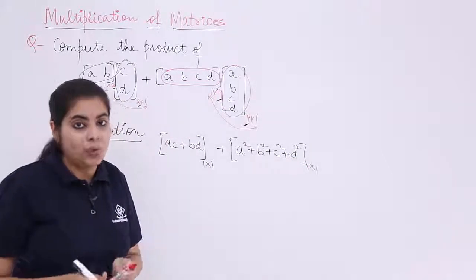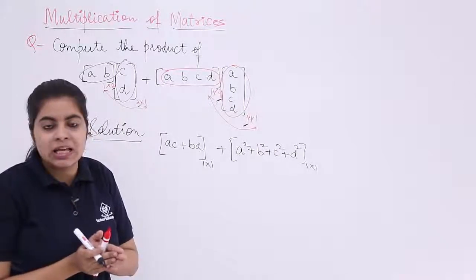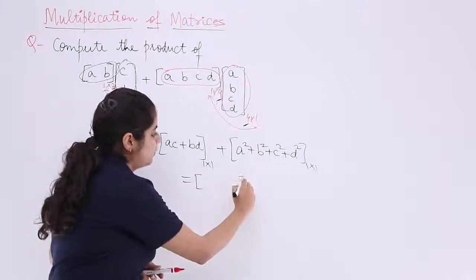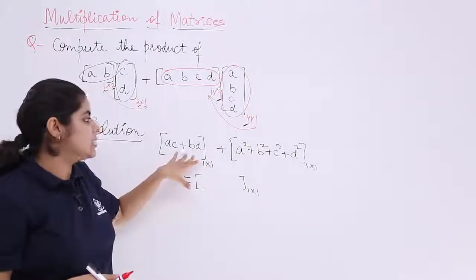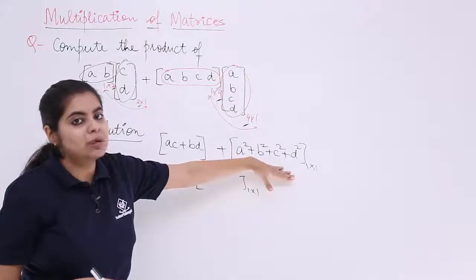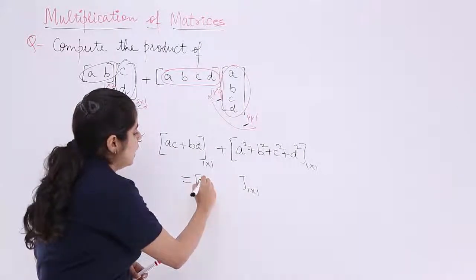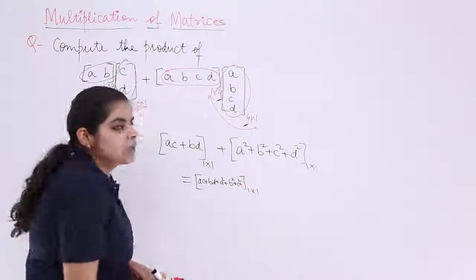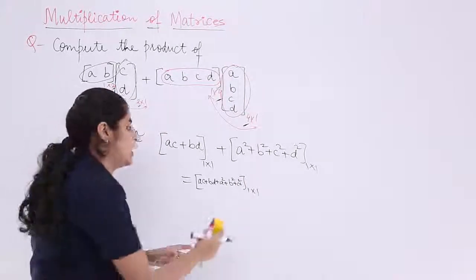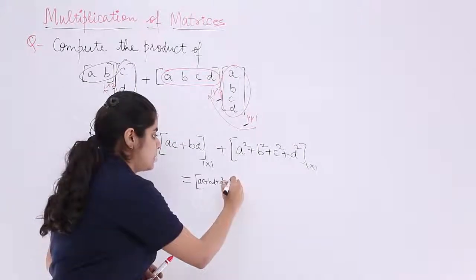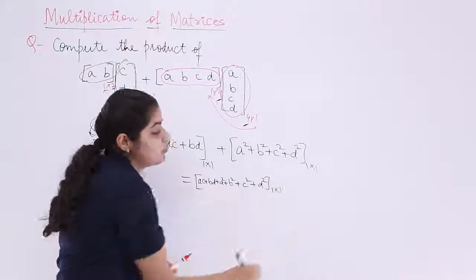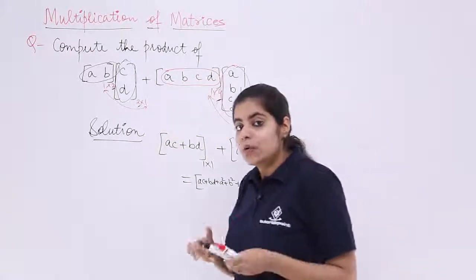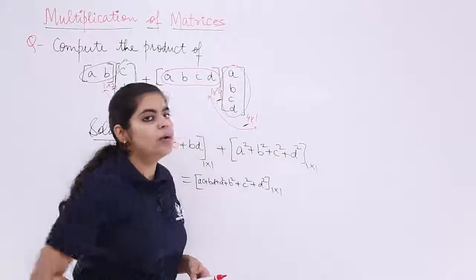Now, what about the addition of these two matrices? Addition is possible only when the order is the same — and both are 1×1, so we can add them. Adding them together gives AC + BD + A² + B² + C² + D². So the final answer is A² + B² + C² + D² + AC + BD — a simple result based on matrix multiplication and addition, yielding a matrix of order 1×1, meaning one row and one column.